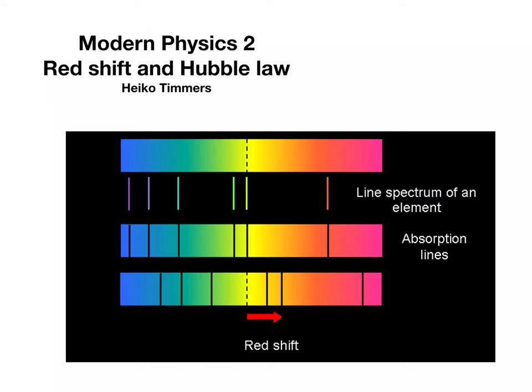In order to understand this redshift, two velocities have to be considered: the velocity of light at 3 times 10 to the 8 meters per second and the speed of the stellar object, for example a galaxy that moves away from us.